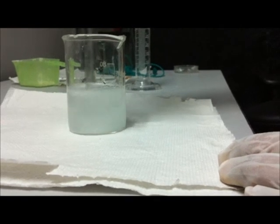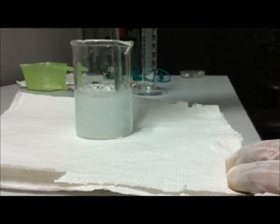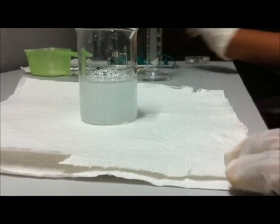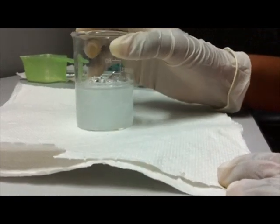Next we stir the mixture with the stirring rod or glass rod. You can also use a magnetic stirrer for the purpose. Now we've stirred it, setting the glass rod aside.